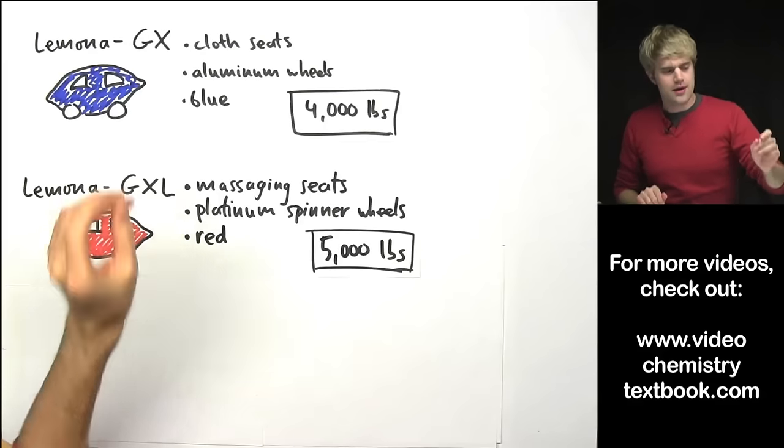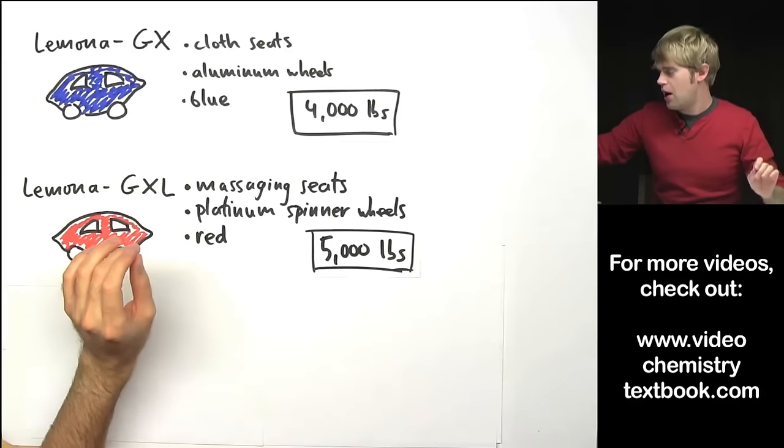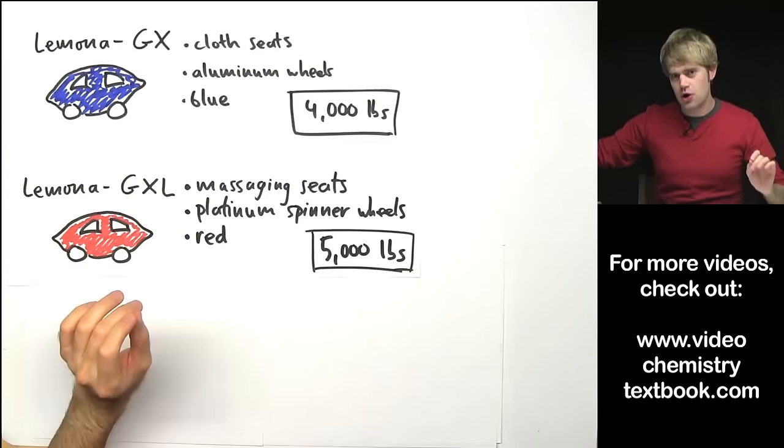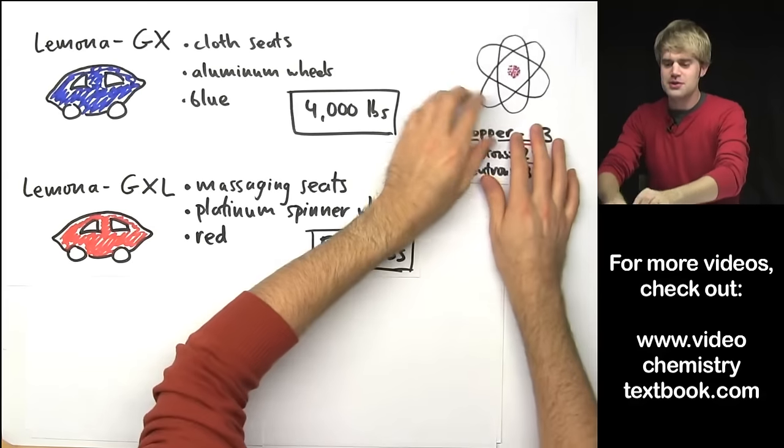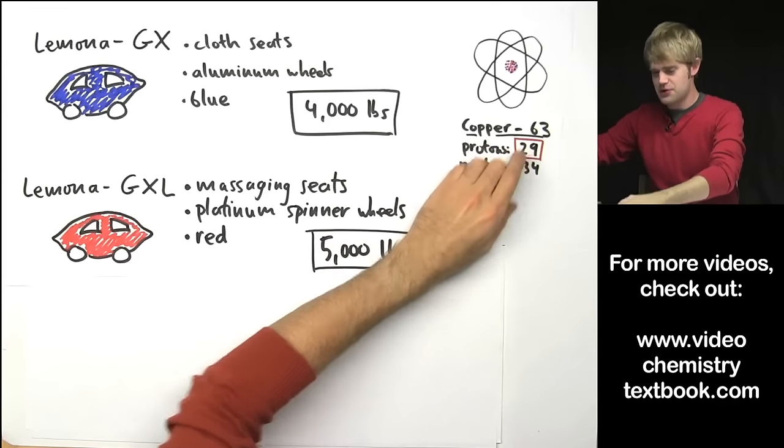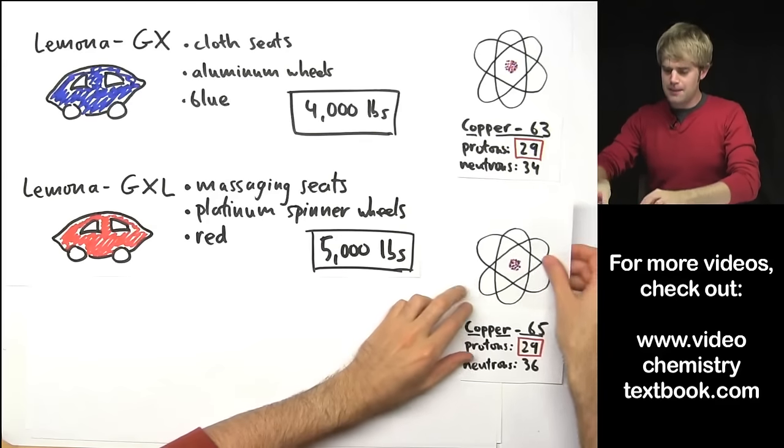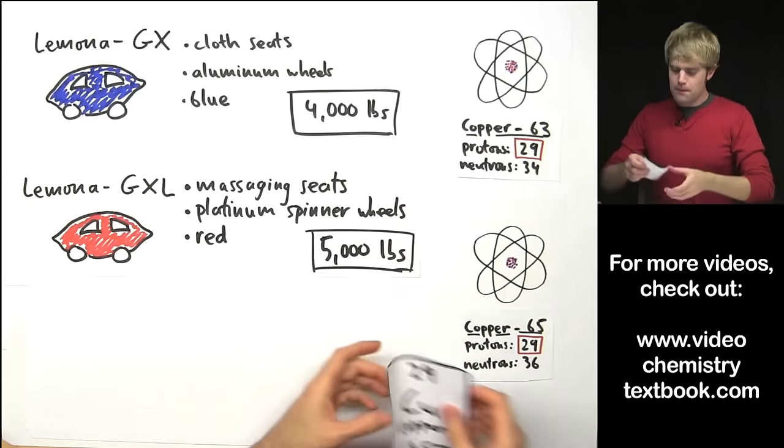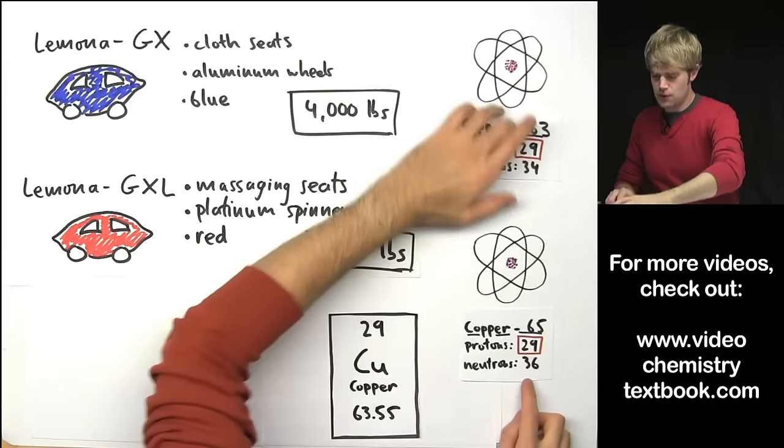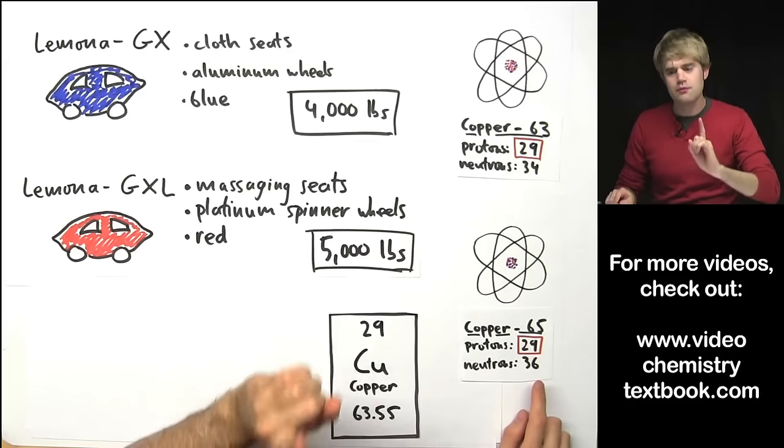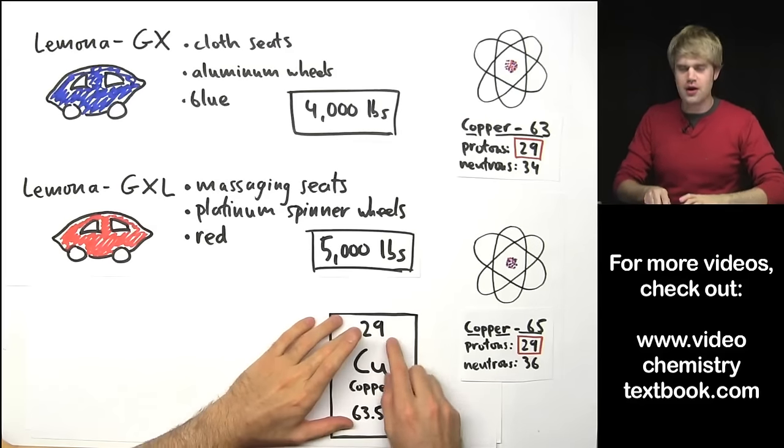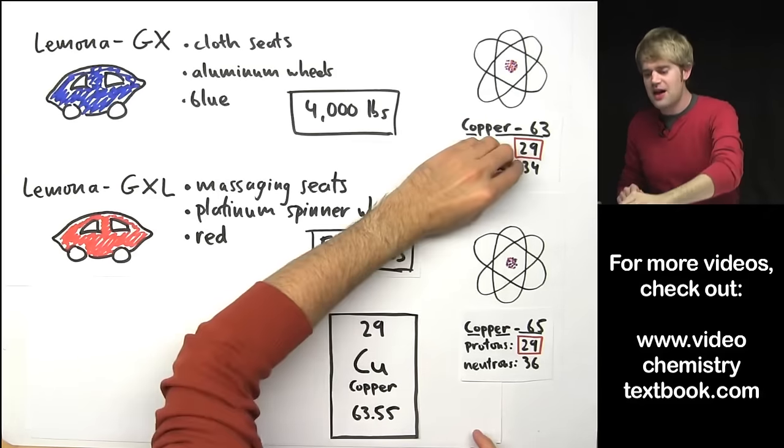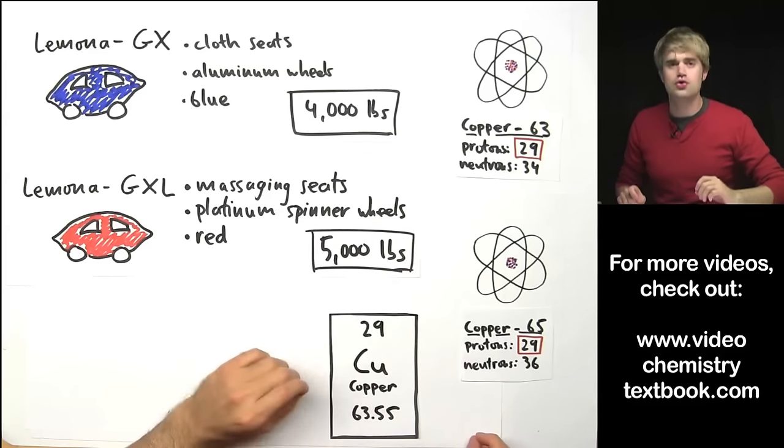In this way the models of the Lamona are very much like isotopes of an element. Copper, for example, comes in two models, copper-63 and copper-65. Both of these isotopes of copper have the same number of protons, 29, because the atomic number of copper is 29 but they have different numbers of neutrons.